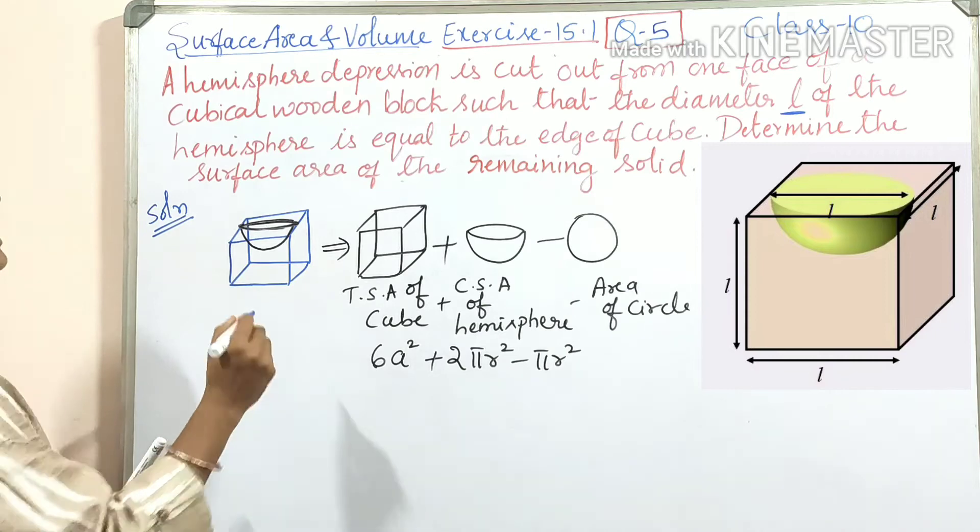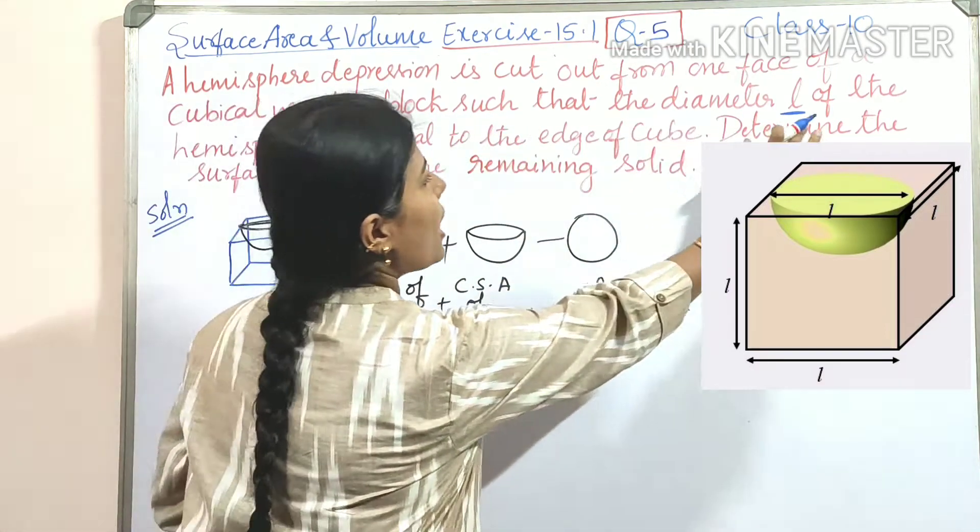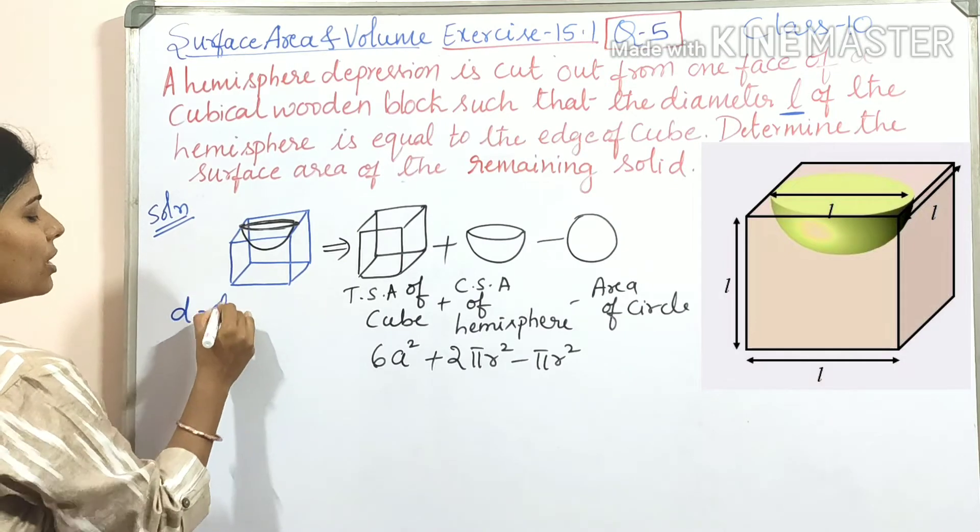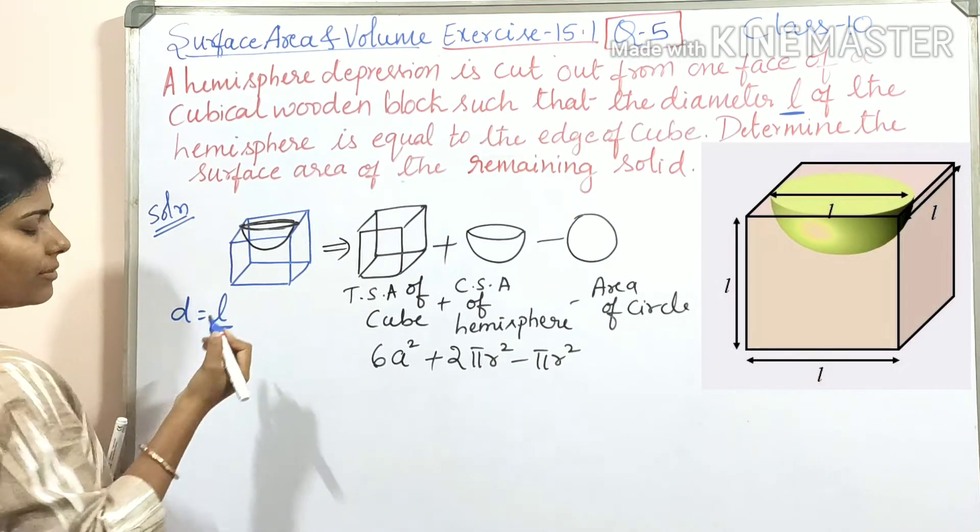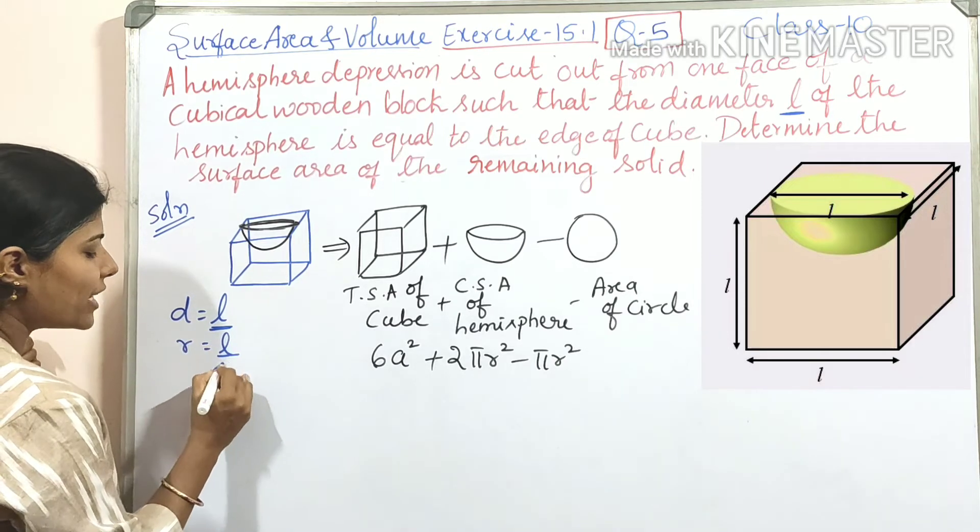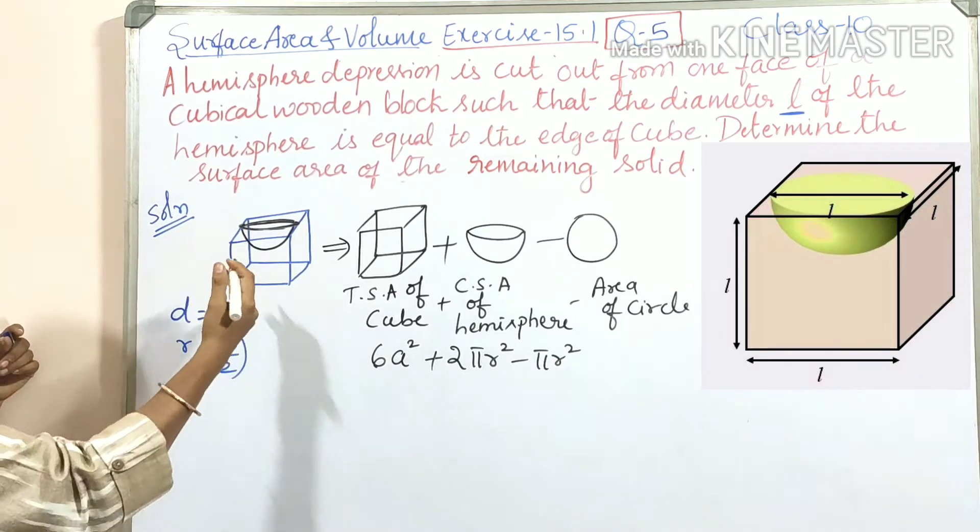Now let us take, here got a given. The diameter of the hemisphere, diameter D is equal to L units. They gave L units. But what will be the radius? L by 2. Half of diameter.